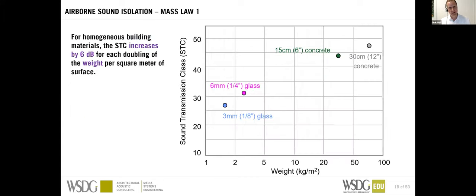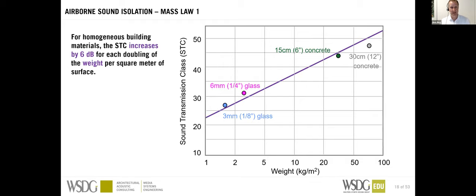Let's look at the Mass Law. For a single-layer homogeneous building material — glass, concrete, gypsum, wood — the STC, or sound transmission class, increases by 6 dB for each doubling of the weight per square meter. You can see 3 mm glass versus 6 mm glass following this line. The same applies to 6-inch concrete versus 12-inch concrete — also a 6 dB increase for each doubling of weight. The easiest way to increase weight is to increase thickness, but the key parameter is the weight itself.